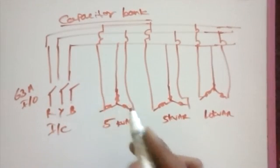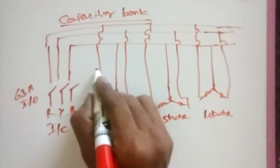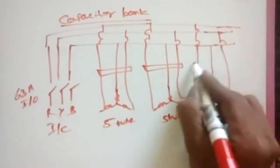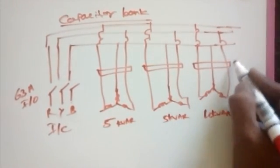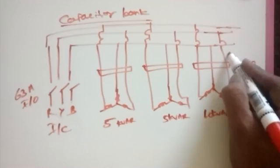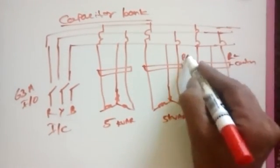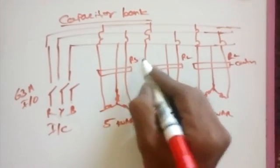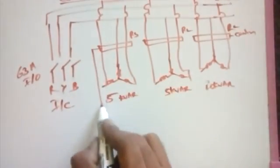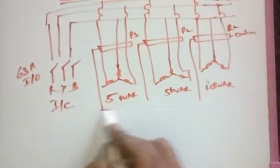And then the capacitor is going to switch on by using contactor. That means contactor, this is L, R1, R2, R3. Then these are the contactors going to switch on by using PF regulator.